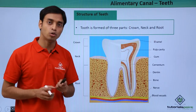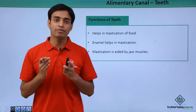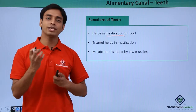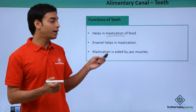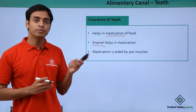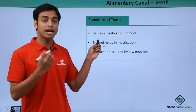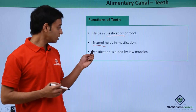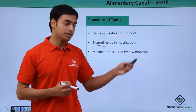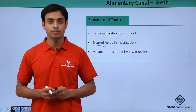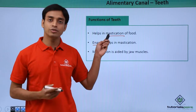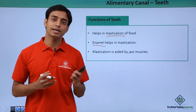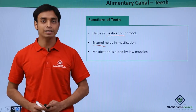The root is embedded inside the socket bone present inside the mouth. The general functions of the teeth include mastication of food — breaking down complex food materials into very small parts — aided by the enamel, which is the strongest and hardest part of our body. Mastication is also aided by the jaw muscles, which enable the movement of the teeth. In this video we have discussed the structure, dental formula, types, and functions of teeth.